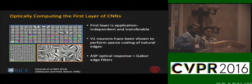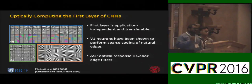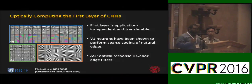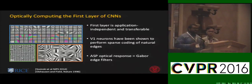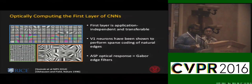Our observation is that angle-sensitive pixels have an optical response that resembles edge-filtered Gabor wavelets. So rather than training the first layer, we hard-code this layer optically to save energy, and then let the rest of the network layers fine-tune for the particular visual recognition task.